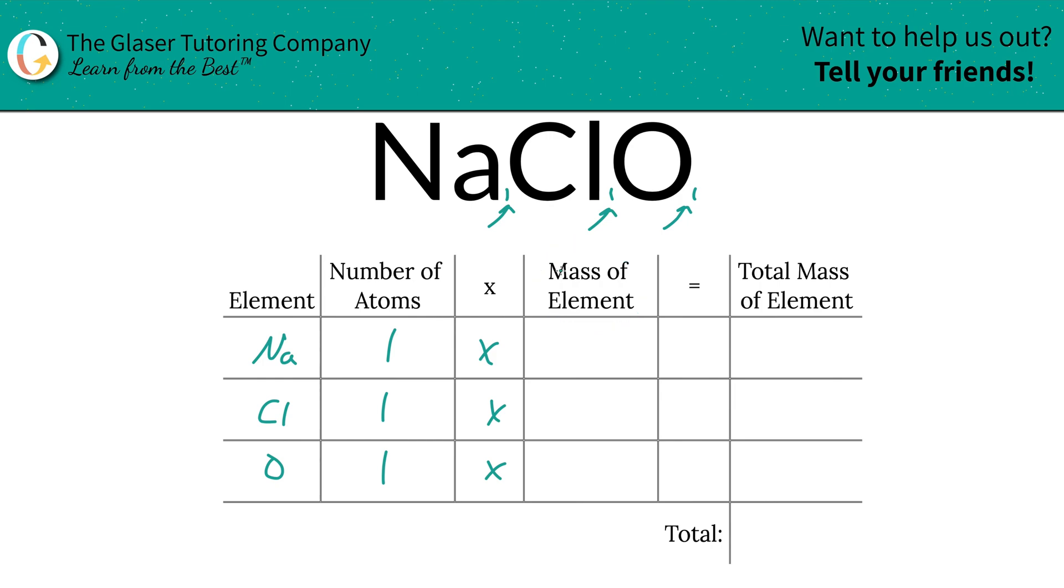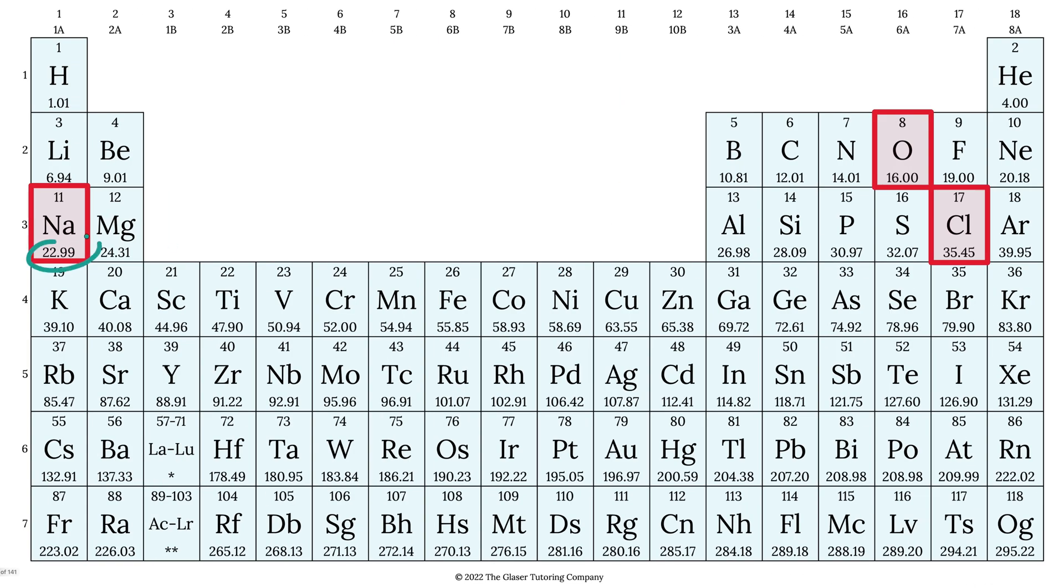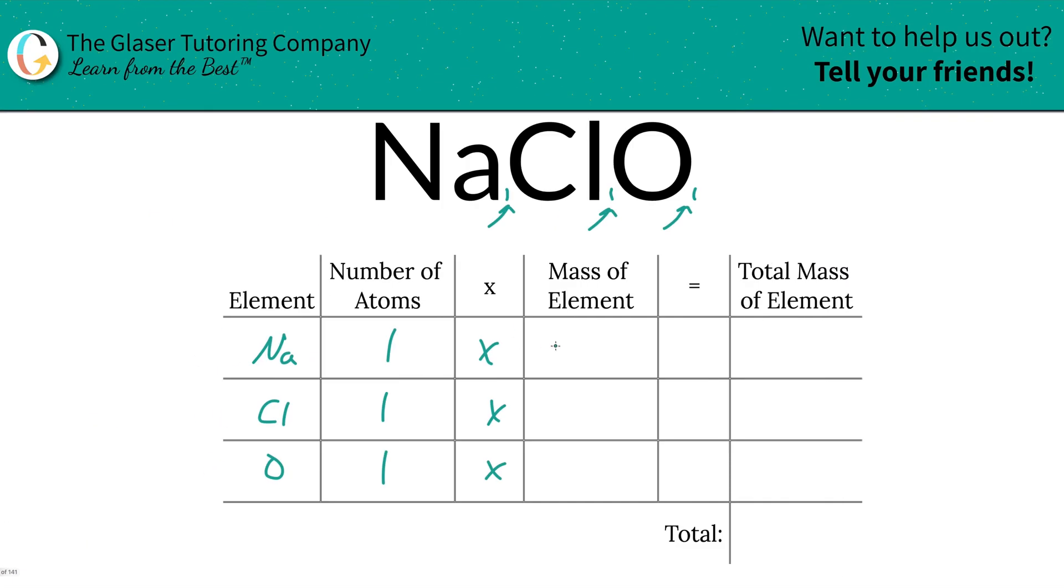Then we're going to multiply it by the mass of each particular element. That's where the periodic table comes into play. So sodium is 22.99, chlorine is 35.45, and oxygen is 16.